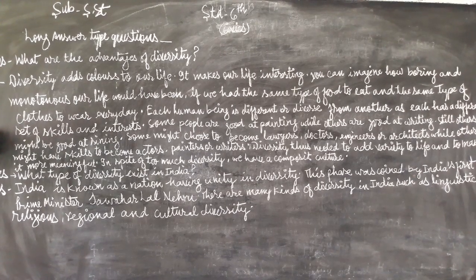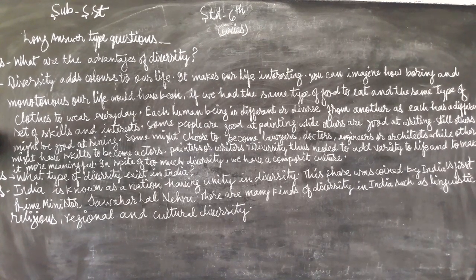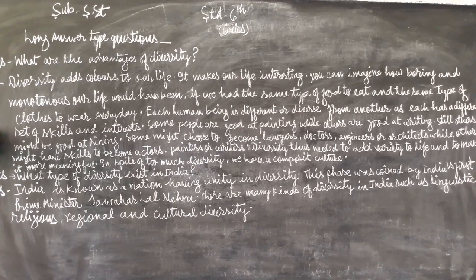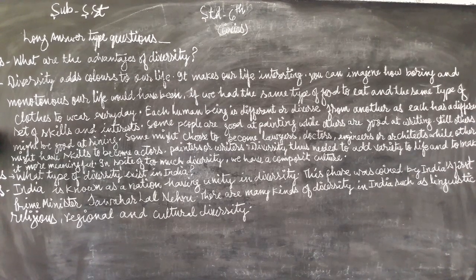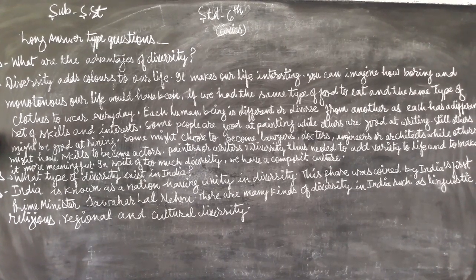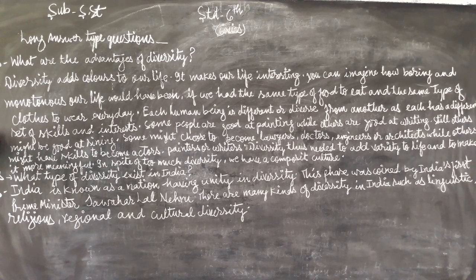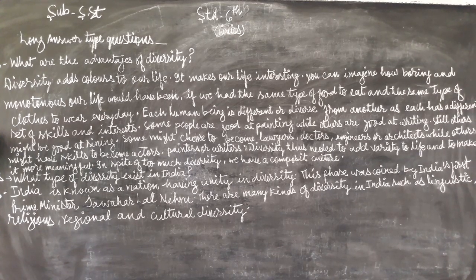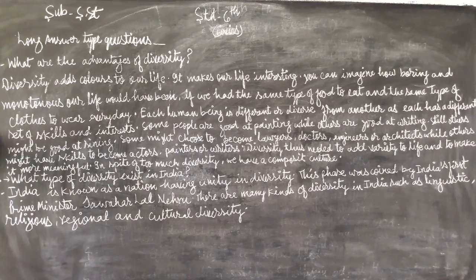Some people might be good at singing. Some people choose to become doctors, engineers, and architects, while others might have the skill to become actors. We have a composite culture.